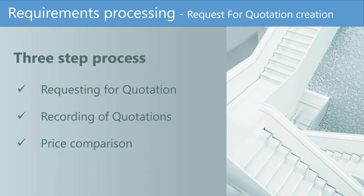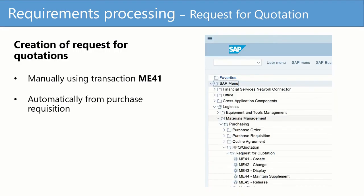Creating RFQs, recording responses and comparing prices are the requirements processing steps before processing purchase orders. The creation of an RFQ can be done through transaction ME41 manually. We will see this transaction in a demo in SAP in the next lesson. RFQs can also be created automatically from the purchase requisition as detailed in the previous lesson.